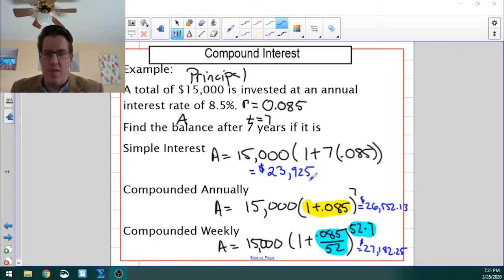So here are our totals. We've got $23,925, $26,552, and $27,182. So in this case, the more compounds, the better. A lot of times what you'll see in a problem, however, is, is it better to compound more often at a lower rate or less often at a higher rate? Something that's interesting to consider. It would depend on the rate, obviously. Moving on.